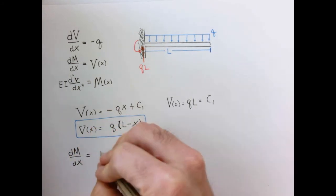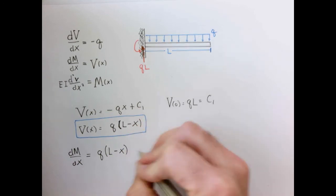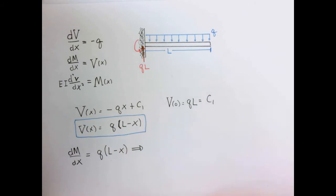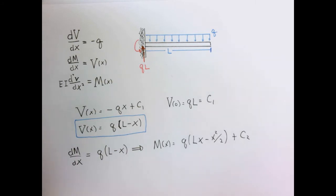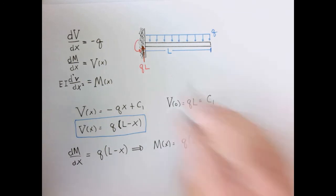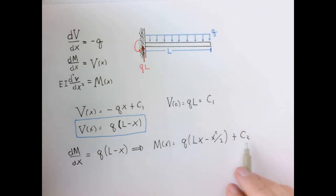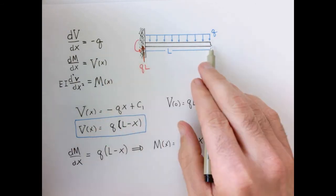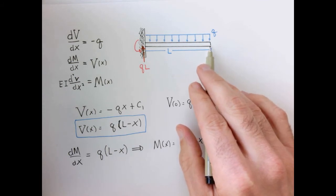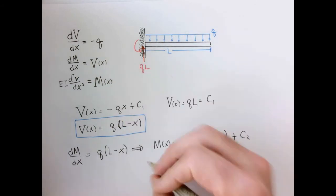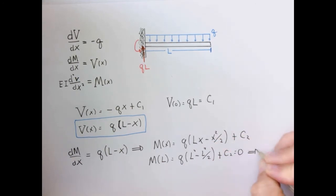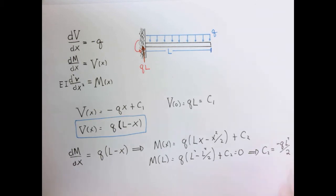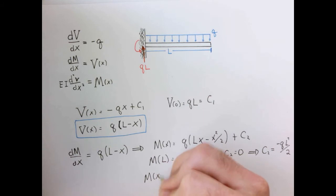We use the value for the shear and integrate the moment equation once, picking up another constant of integration C2. For the boundary condition on the moment, since I know the moment at the free end is simply zero, I'll use the condition that M evaluated at x equals L equals zero. That gives us our value of C2, so we can rewrite the moment as a function of x.